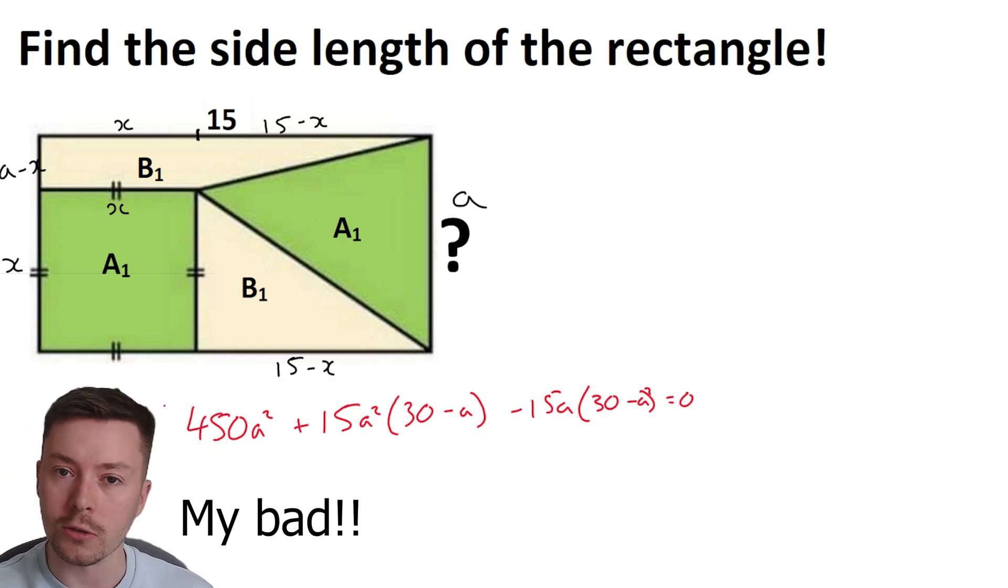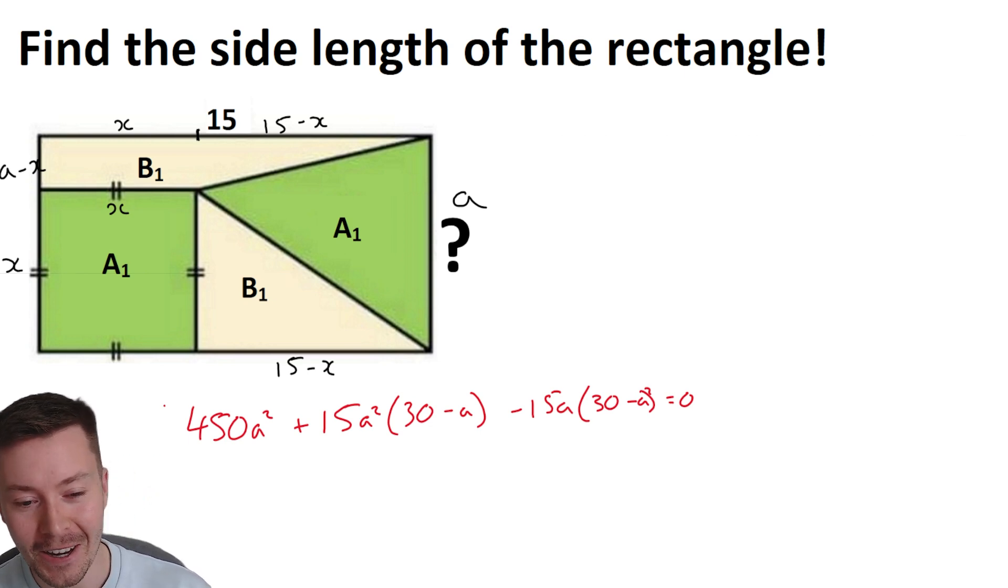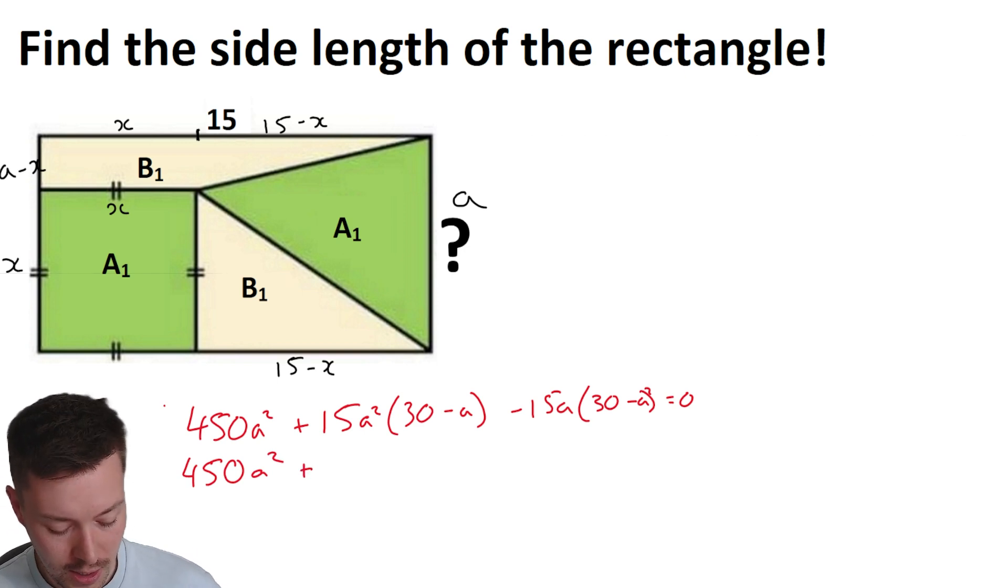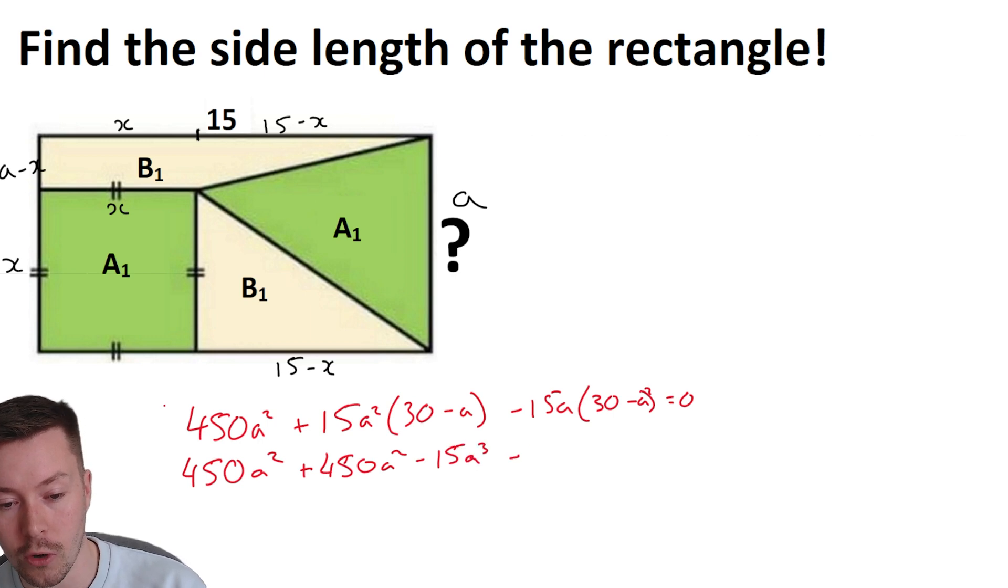And what I'm also going to do, actually, I can get rid of these now. I no longer need these equations, because I've got one equation that I initially need to solve. So let's put that up here, where we can see it. Right, I just remembered you couldn't see those equations because they were behind my head. Hopefully you remembered what they were, but they were there. Now here I'm going to start expanding brackets. So I get 450 A squared plus, now 15 times by 30 is 450 A squared off the top of my head. Definitely didn't use a calculator for that. Minus 15A cubed, and then we've got minus 15A, and then we've got to expand this bracket, 30 minus A squared.